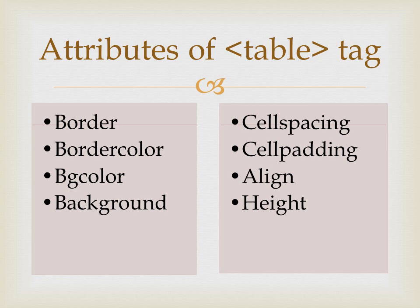The first attribute is border. Border is used to give a border to your table — you can set the height, width, and size of the border. Then comes border color, which gives color to your border.